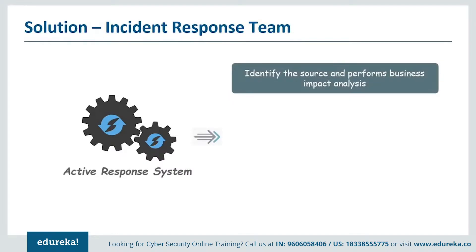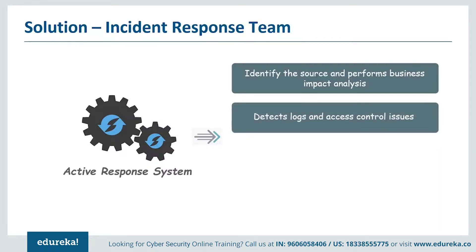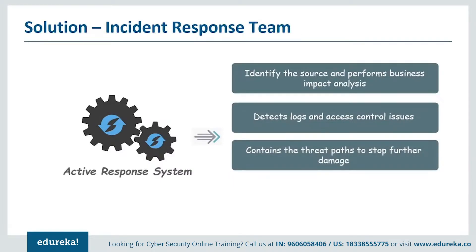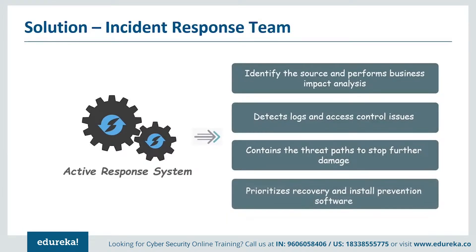As a first step, the IRP team identifies the source of the security breach, then orchestrates a series of events to prevent a serious security disaster. They detect logs and access controls and contain the threat so that Wendy's company can avoid further damage. After the attack is contained, the team identifies the data that has been stolen or compromised during the incident. Then the team prioritizes recovery to protect Wendy's business from further attacks, and now Wendy's customers can continue their spa day without any hazards. In the past, a security breach of this nature would have required Wendy to contact several agencies and third parties — or in the worst case, pay the hackers. But the IRP platform organized all the people, processes, and technology to identify and contain the problem in a very limited amount of time.